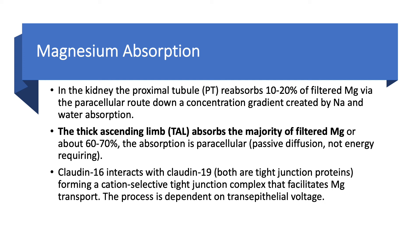In the kidneys, the proximal tubule absorbs 10 to 20% of filtered magnesium via the paracellular route. Sodium and water absorption creates a gradient, and magnesium follows passively — no energy needed. In the thick ascending limb, the majority of filtered magnesium is reabsorbed — 60 to 70% — and this is unique: for virtually every other cation (sodium, potassium, calcium), the majority of reabsorption occurs in the proximal tubule at 60–70%. Magnesium is unique in that the thick ascending limb handles the majority, via passive paracellular diffusion that does not require energy.